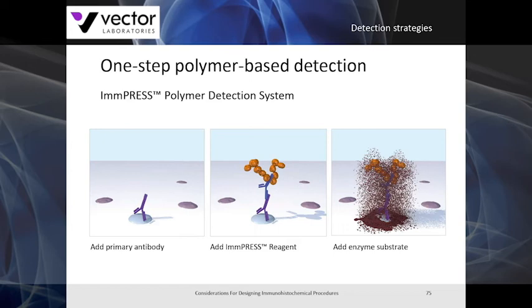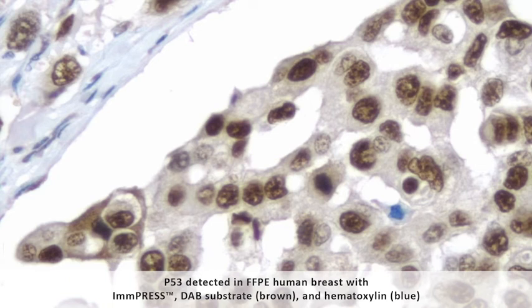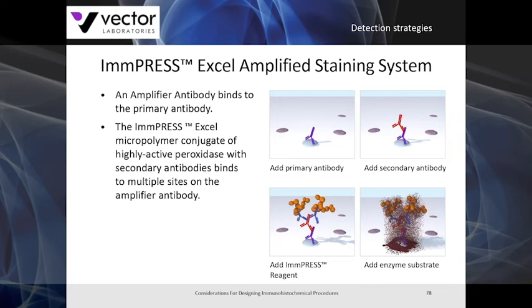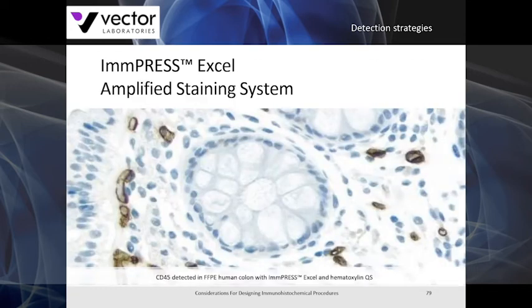Due to the unique micropolymer, the Impress polymer system localizes even the most challenging antibodies such as nuclear antigens — P53 is demonstrated very strongly in breast carcinoma using our Impress polymer system with DAB substrate. In addition to our one-step polymer systems, we also offer a two-step polymer option with even greater sensitivity. By adding an amplifier antibody, you incorporate an additional layer of amplification. The Impress XL micropolymer conjugate binds to multiple sites on the amplifier antibody, allowing more enzyme density at the site of your target antigen. In this human colon, CD45 is demonstrated very effectively with Impress XL along with DAB substrate.